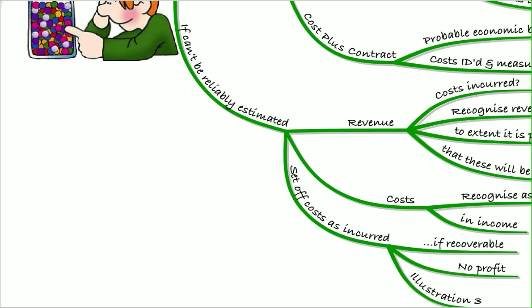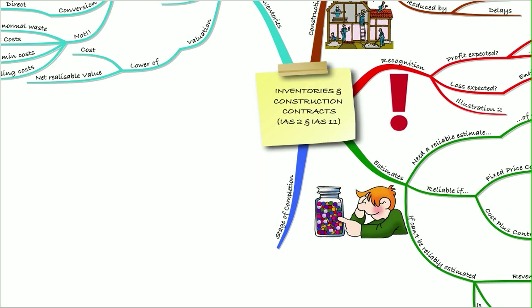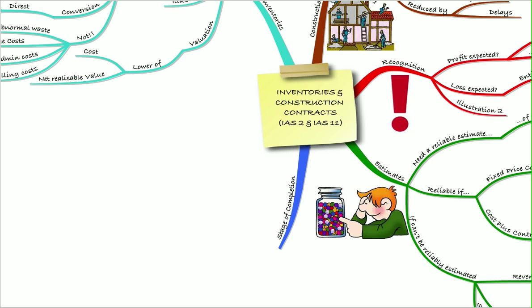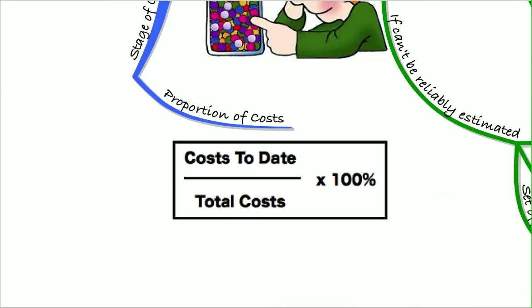So remember we said that we're going to recognize our profit by the stage of completion on the contract. We may have to calculate that. If we do, we can do it in two ways.